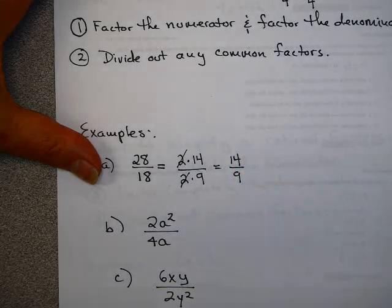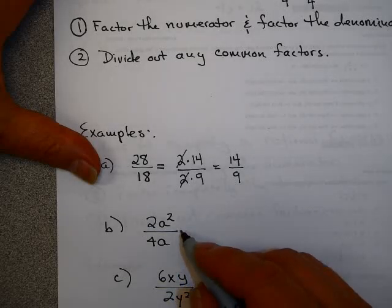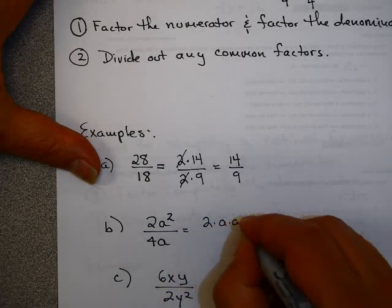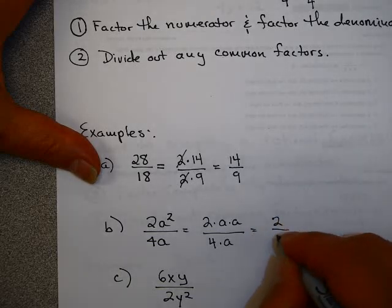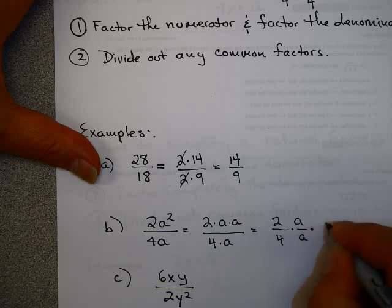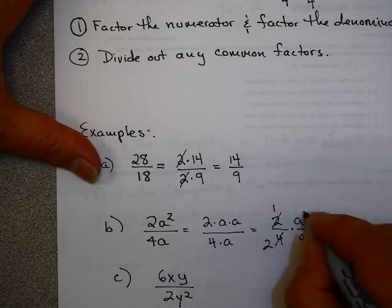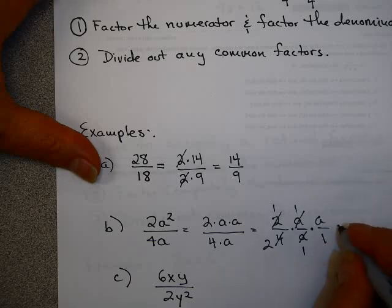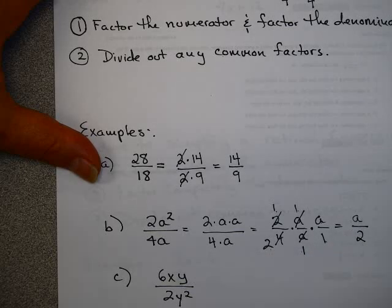In algebra, improper fractions are perfectly fine. Now, this problem is a rational expression. 2a² means 2 times a times a, and 4a means 4 times a. Here you have 2 over 4 times a over a times a over 1. The 2 and 4 have a common factor of 2, and a over a have a common factor of a, while a over 1 can't be reduced. So the numerator is 1 times 1 times a, the denominator is 2 times 1 times 1, and your simplified form is a over 2.